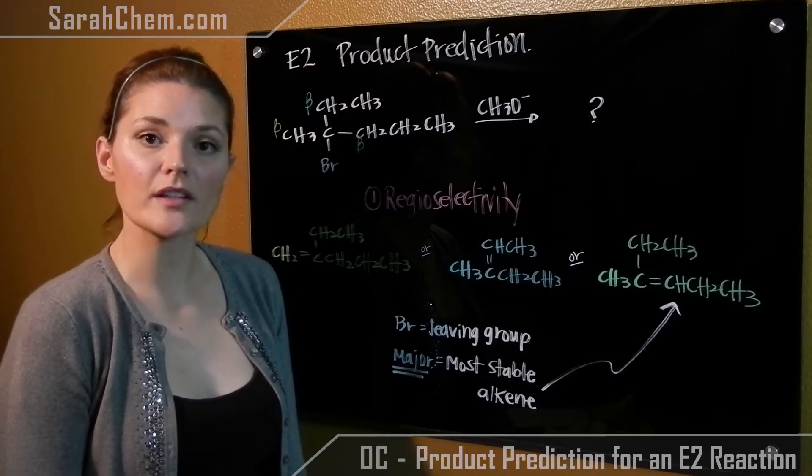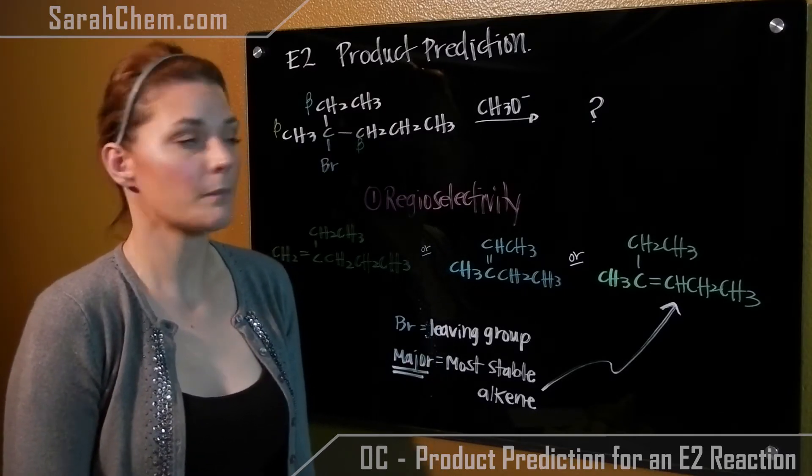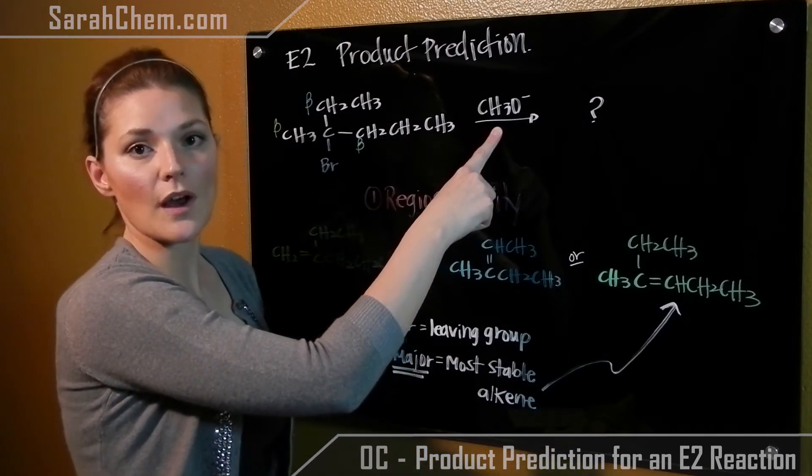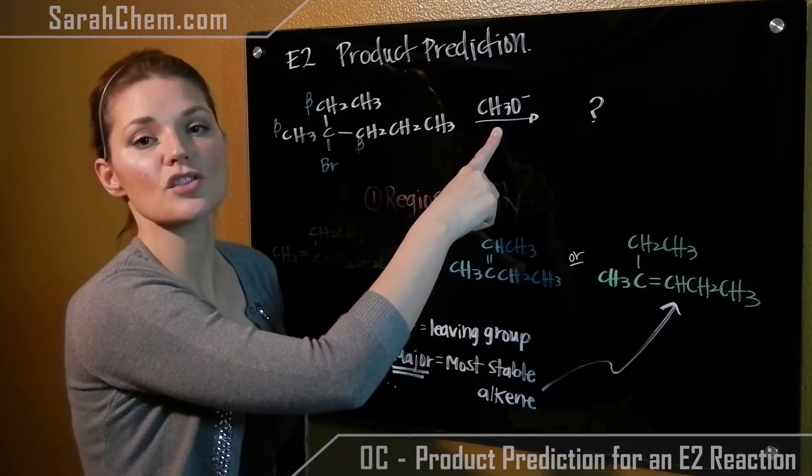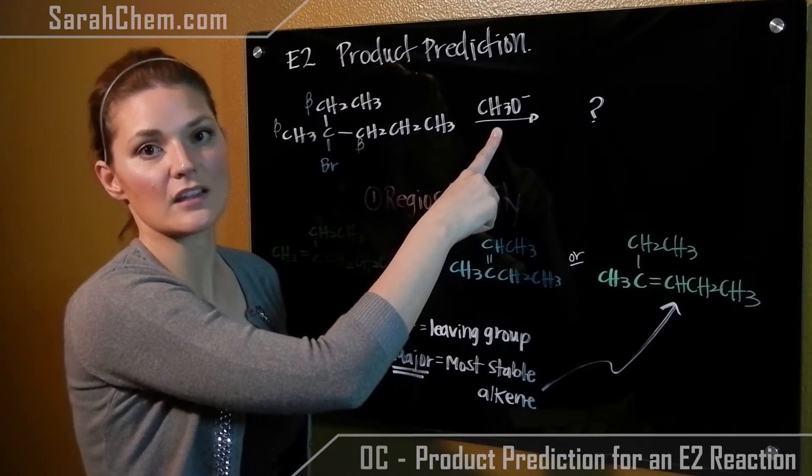So the next thing that we're going to look at then is the base that's used. So here we've got the methoxide ion and methoxide is a very strong base. Strong bases are what we use in an E2 reaction.